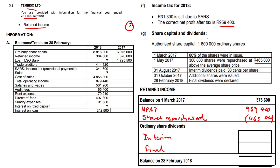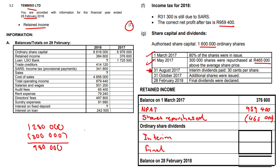I will redo the calculation. Authorized share capital is 1,600,000 ordinary shares — those are the shares we are allowed to issue. 80% were issued, so 80% of 1,600,000 gives us 1,280,000. Then 300,000 shares were repurchased. This is in chronological order, so we factor that in. Interim dividends were paid in August, and shares were repurchased in May — before the dividend — so we factor in the repurchase, giving us 980,000 shares. At $0.30 per share, that is $980,000 × 0.30 = $294,000.